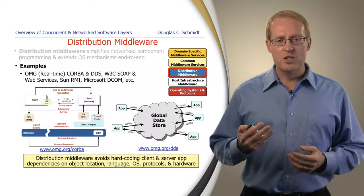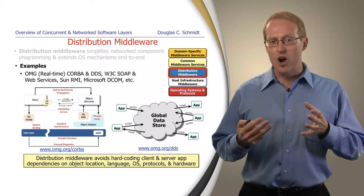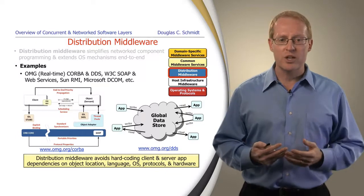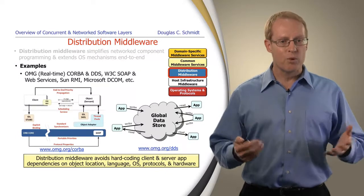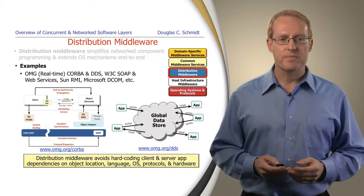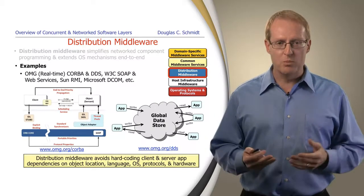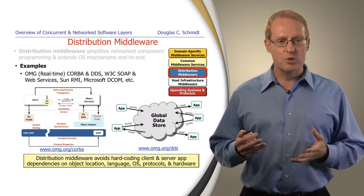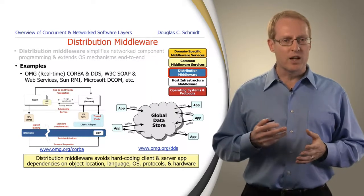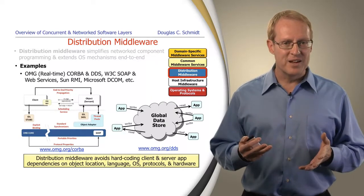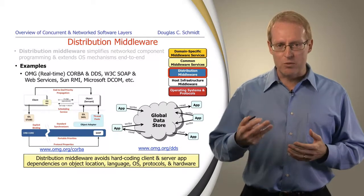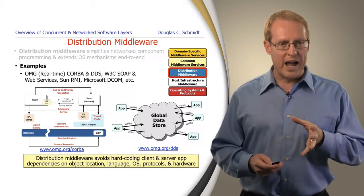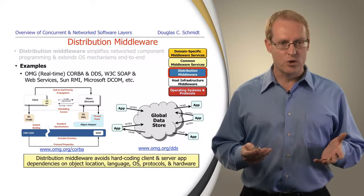Some of the other nice things that distribution middleware does is it avoids having to hard code your client and server applications with deep dependencies on object location, programming language, operating system, network protocol, and hardware — it abstracts those things away. These types of technologies are fairly widely used, especially in the enterprise space. There are still some domains, particularly real-time embedded systems, where people are a little nervous about overhead, but benchmarking and profiling generally show that distribution middleware adds relatively little overhead.